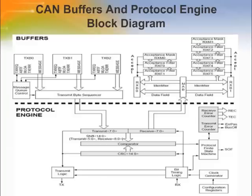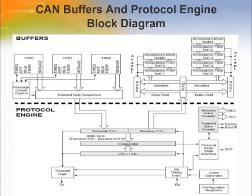The MCP2515 has three transmit and two receive buffers, two acceptance masks — one for each receive buffer — and a total of six acceptance filters. The heart of the engine is the finite state machine or FSM. The FSM is a sequencer that controls the sequential data stream between the TX/RX shift register, CRC register, and the bus line. The FSM also controls the error management logic or EML and the parallel data stream between the TX/RX shift registers and the buffers. The cyclic redundancy check or CRC register generates the CRC code which is transmitted after either the control field or the data field, and is used to check the CRC field of incoming messages.